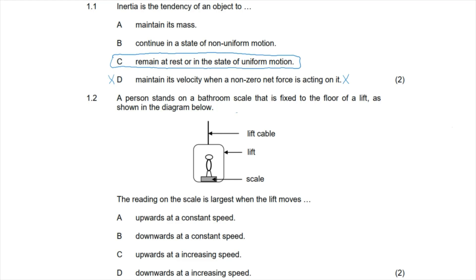Question 1.2: A person stands on a bathroom scale fixed to the floor of a lift, as shown in the diagram. The reading on the scale is largest when the lift moves in a certain direction. It's important to remember that the force of gravity acting downward on the person remains constant because their mass is constant.